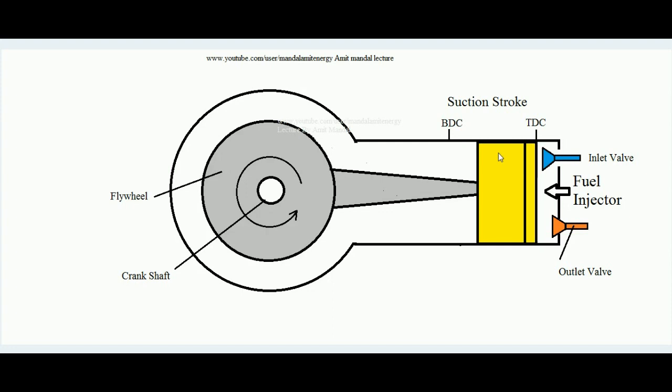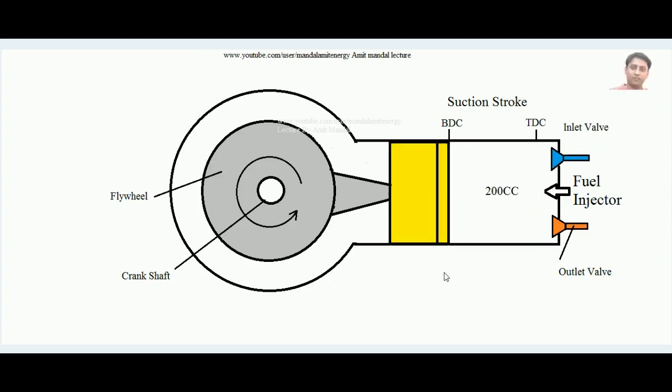I will revise it in short. The first stroke of four stroke CI engine is a suction stroke in which the piston moves from TDC to BDC and it sucks fresh air inside.